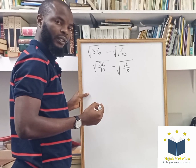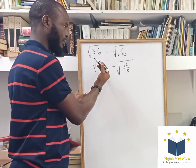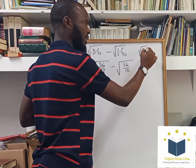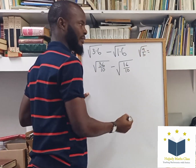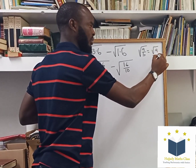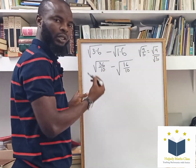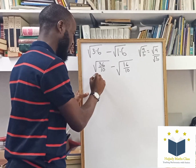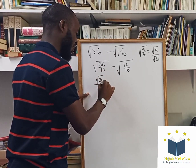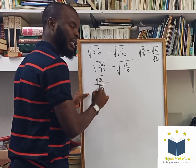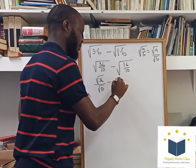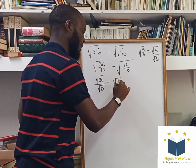Using the rule of indices, this can be split: we have root A over B, which is the same thing as writing root A over root B. Utilizing this rule, here I'm going to have root 36 over root 10, minus root 16 over root 10.